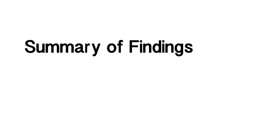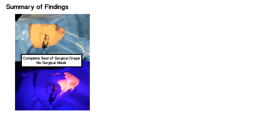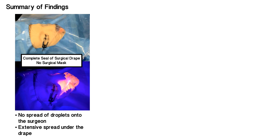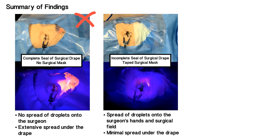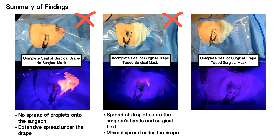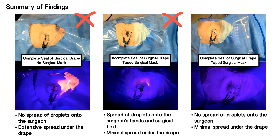Findings from these simulations of ophthalmic surgery suggest the following regarding surgical draping and use of masks for patients. Despite a complete surgical seal of the drape, the lack of a mask on the patient resulted in droplet contamination of the underside of the drape but no other visible droplet spread. An incomplete surgical seal with a taped surgical mask resulted in droplet contamination of the surgical field with minimal contamination of the underside. A complete seal combined with a taped surgical mask decreased droplet spread onto both the surgical field and the underside of the drape. Care should be taken when removing the drape to minimize further spread of any particles.